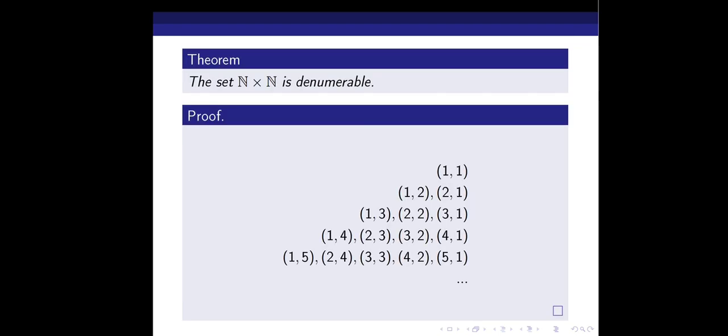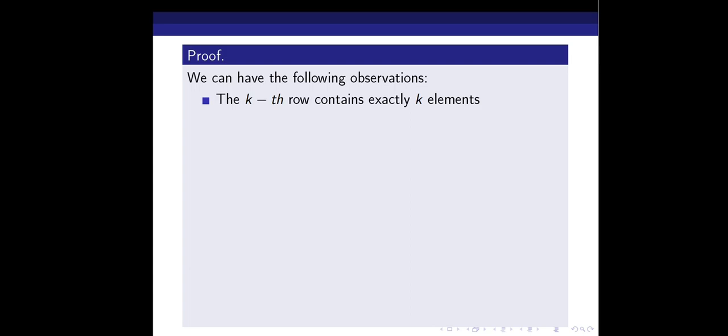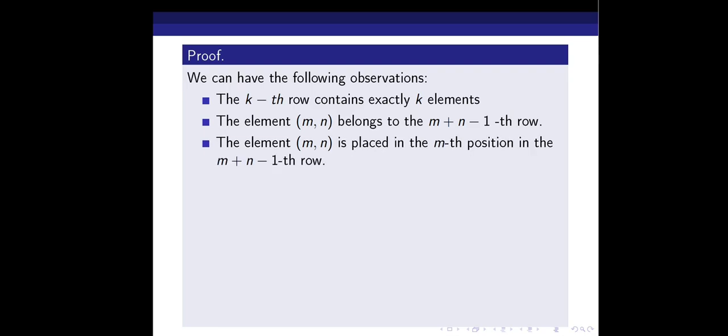The second observation is that the first row contains exactly 1 element, the second row contains exactly 2 elements, the third row contains exactly 3 elements, and the fourth row contains exactly 4 elements, and so on. In general, the kth row contains exactly k elements. The third observation is that the element (m,n) belongs to the (m+n−1)th row.